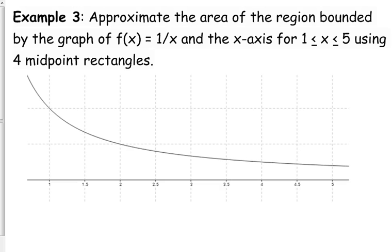So our function is 1 over x, and we're going from 1 to 5, and we want to use 4 midpoint rectangles. We're going to start by breaking up our interval. We're going from 1 to 5. We need to split it into 4 even sections. So obviously, that's pretty easy if we split it at every whole number, 1, 2, 3, and 5. That's going to give us 4 rectangles.